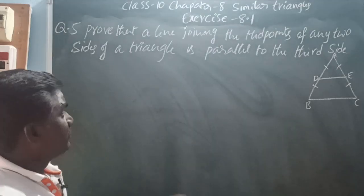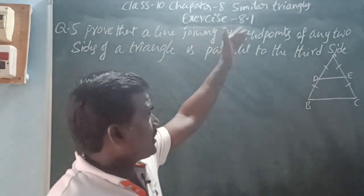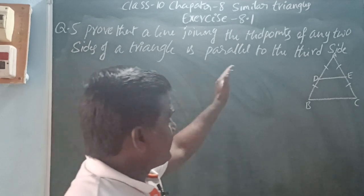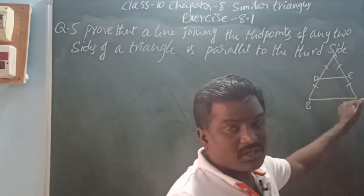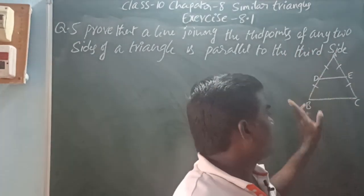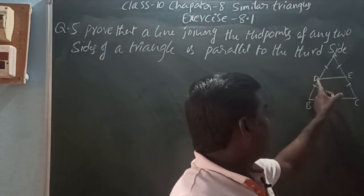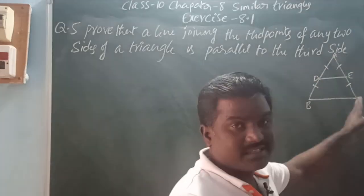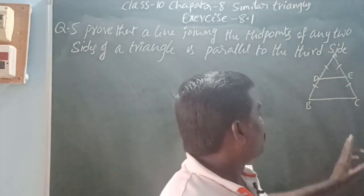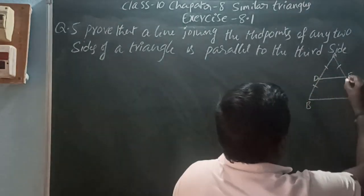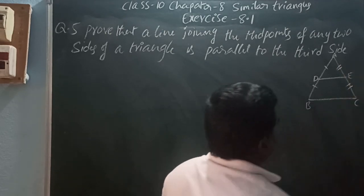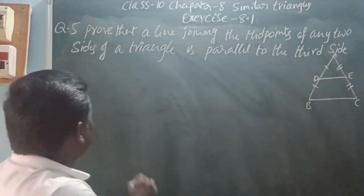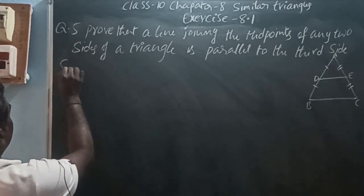Question Number 5: Prove that a line joining the midpoints of any two sides of a triangle is parallel to the third side. In triangle ABC, D and E are midpoints on AB and AC respectively. Prove that DE is parallel to BC.